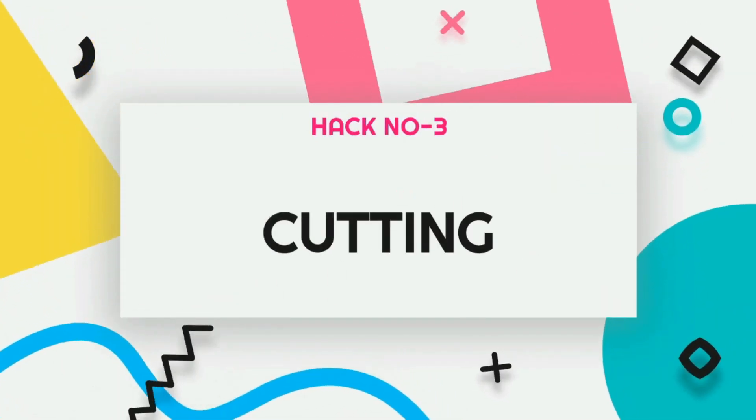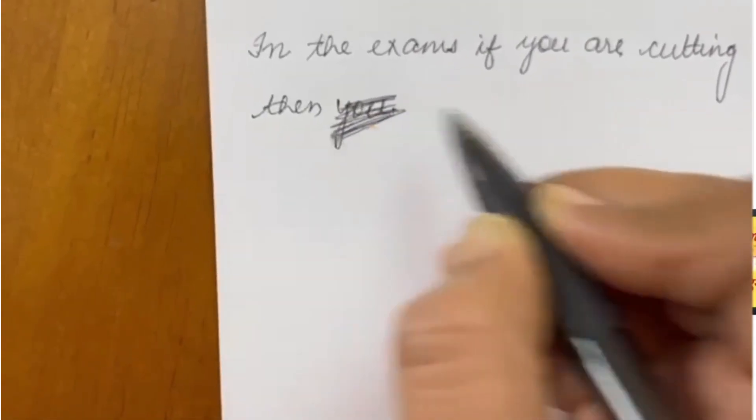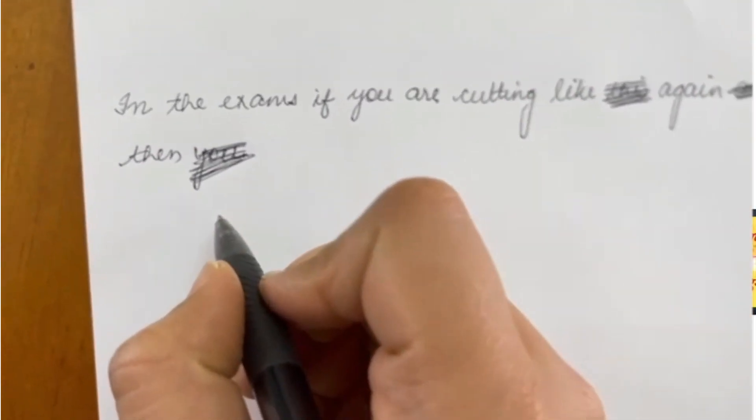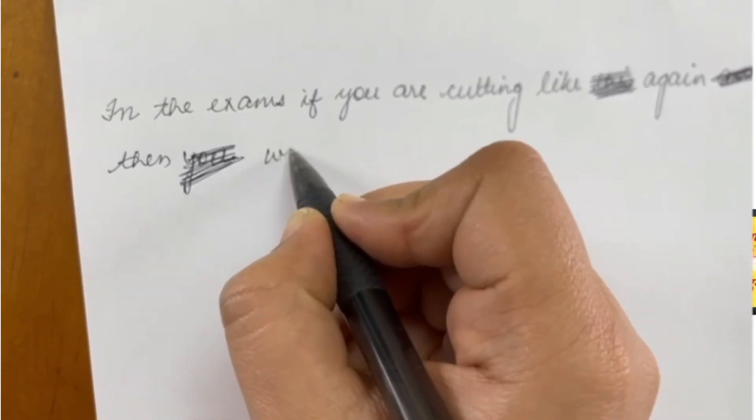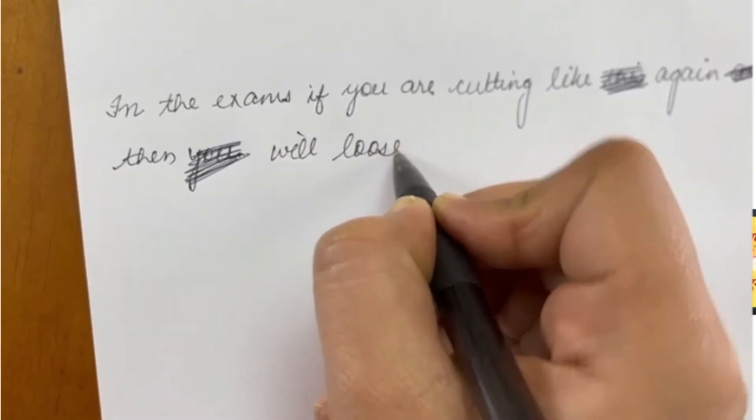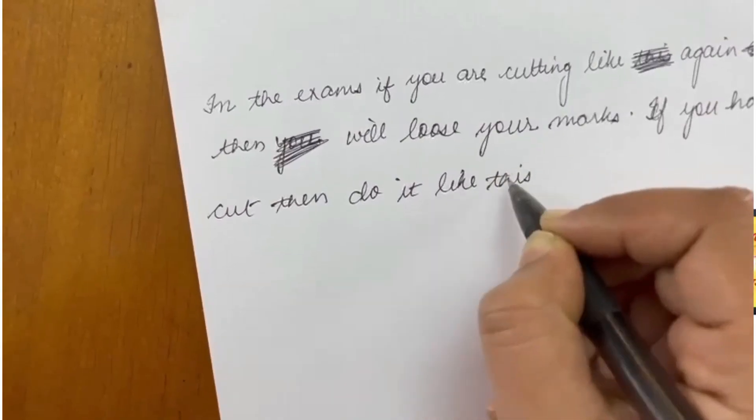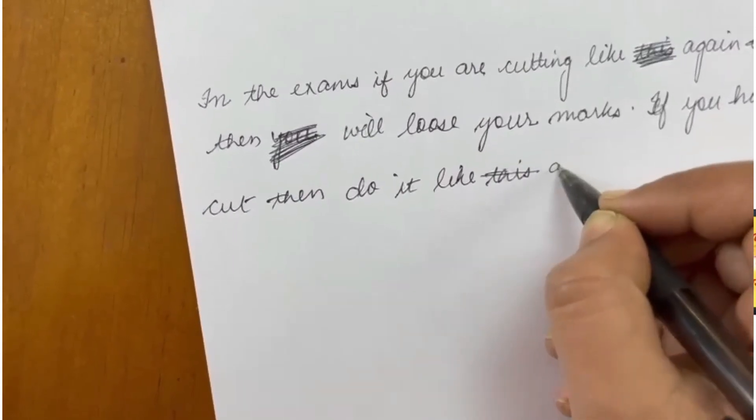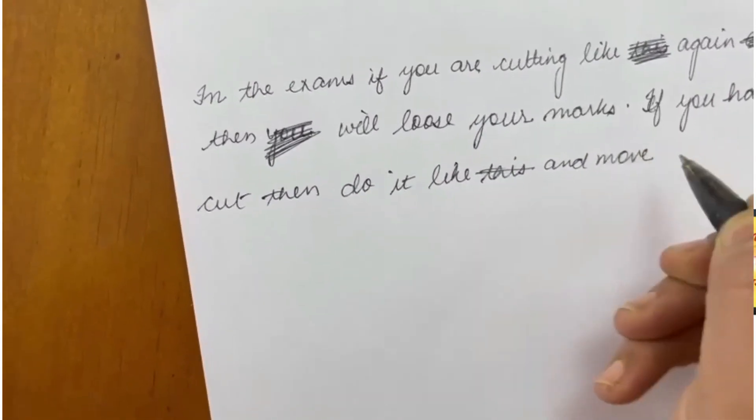Number third mistake is cutting. Kya aap apni answer sheet ko kuch is tarah se cut karte hai, jab bhi aapko mistake kar dete hai? And kya aap bahut frequently cut karte hai? Toh agar aap aisa karte hai, so examiner ko isse aapki psychology pata chalti hai, ki aap bahut nervous hai, ya aapki mind mein clarity nahi hai, isliye aap baar baar cutting kar rahe hai. So, next time whenever you have to cut, you just make a single cut and move on. And next word likhne se pehle, just think about it in your mind before you put it on the paper.